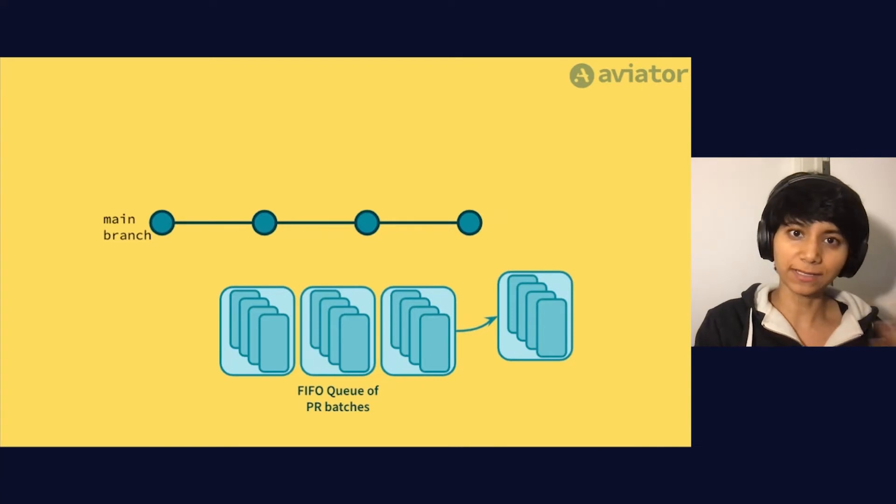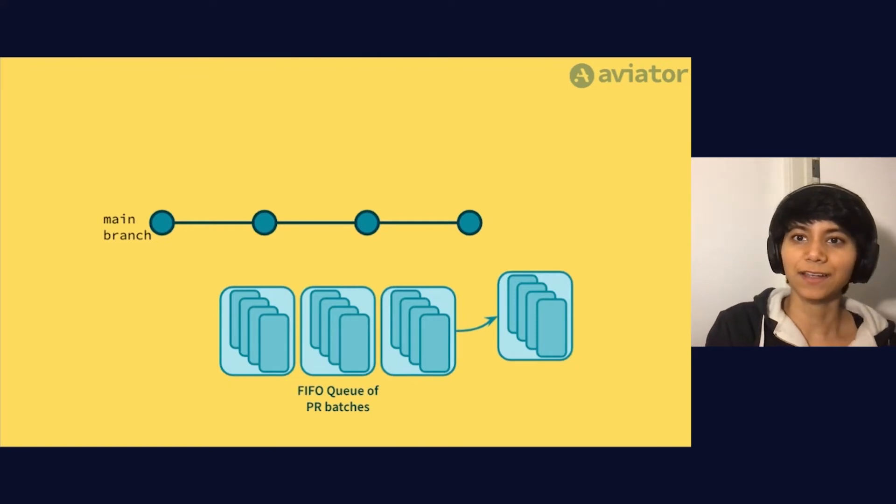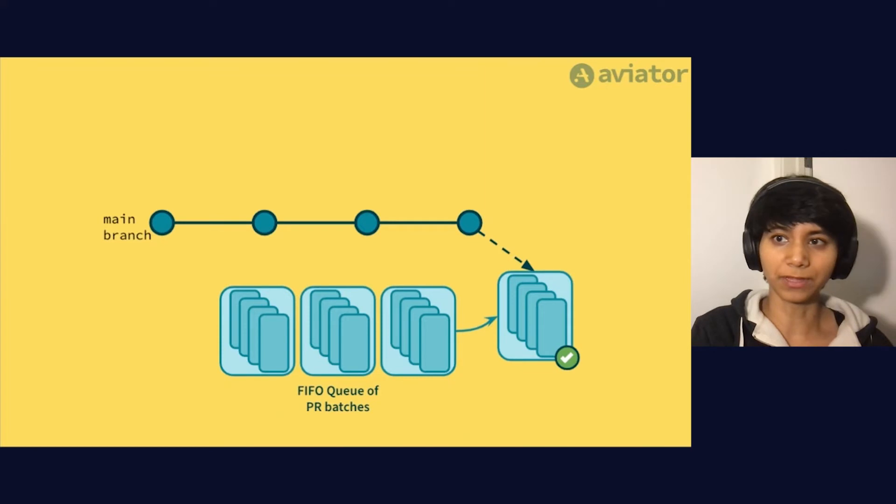Instead of testing PRs one at a time, you can test, say, four or five PRs in a batch, and that way things move a lot faster. Of course, if the batch works with no conflicts, you can merge every PR within the batch.